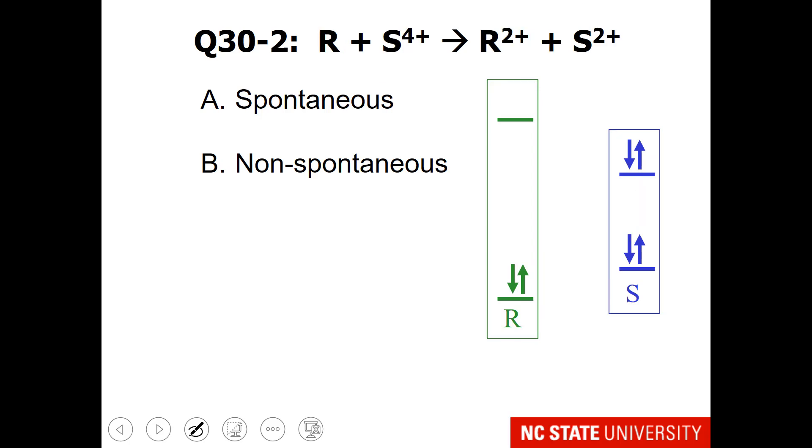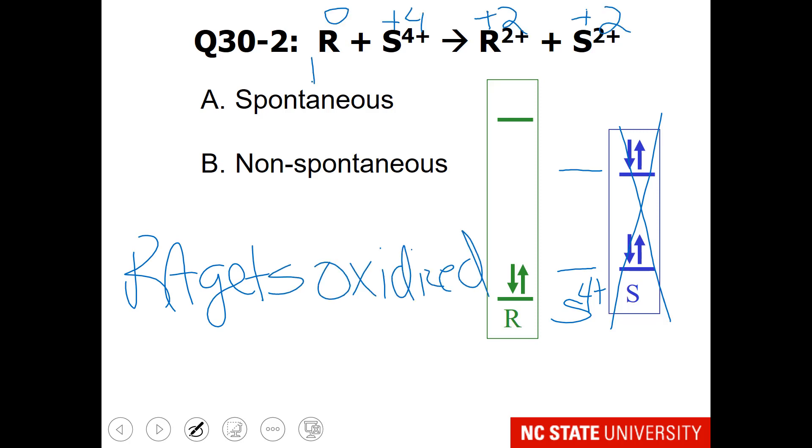Here is another one for you to think about. I'm going to draw S4 plus for you. Once again, remember, the reducing agent gets oxidized. So once again, I think the R is the reducing agent, because it goes from zero to plus two. I'll let you finish this.